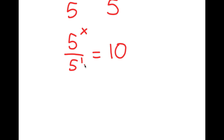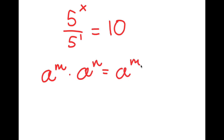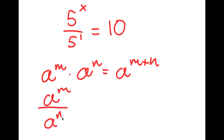There are a few exponent properties that I think you should know. To start, if I have something in the form a to the power of m times a to the power of n, this is equal to a to the power of m plus n. And if I have something in the form a to the power of m over a to the power of n, this is equal to a to the power of m minus n.